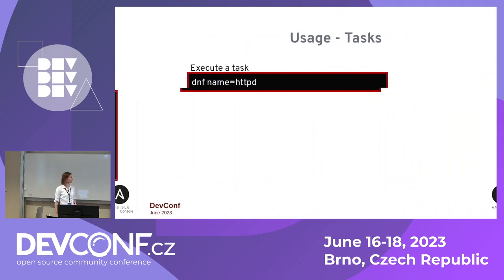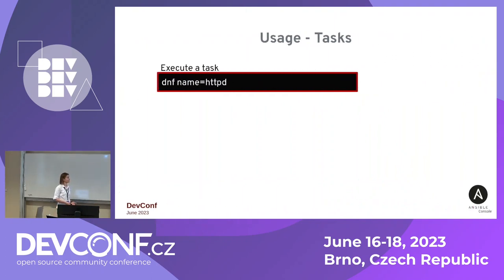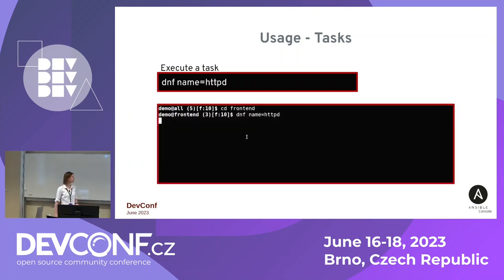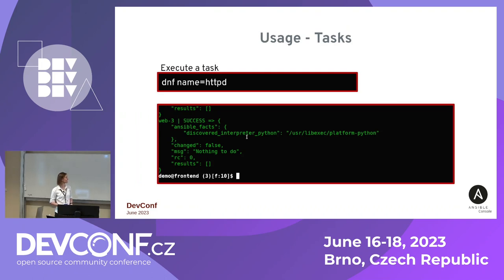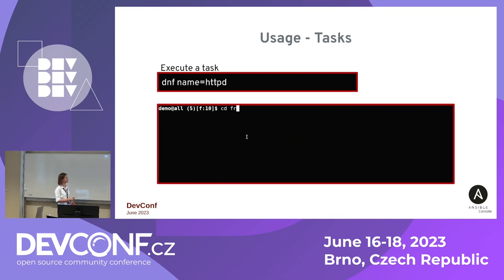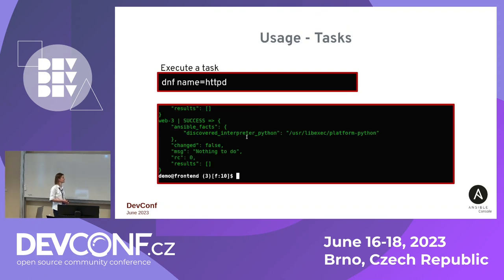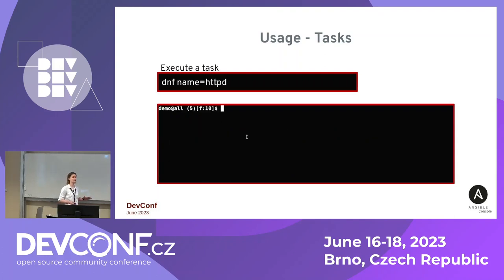Let's jump into usage. As a simple example, we can execute an Ansible task — let's install an HTTP server on every frontend machine. First we narrow down our group to frontend, so instead of five machines we keep three frontend machines, then we execute the Ansible task to install the HTTP server on each of them. Here is the result: nothing to do — everything is already installed. That's how you execute an Ansible task with the help of the console.